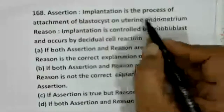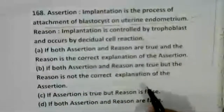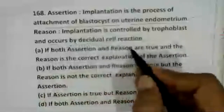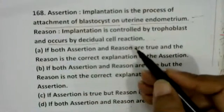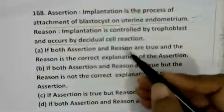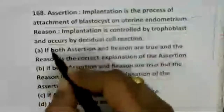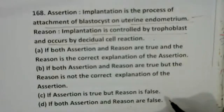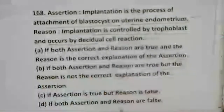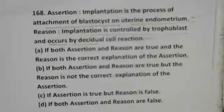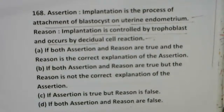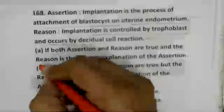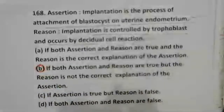Assertion: implantation is the process of attachment of the blastocyst on the uterine endometrium — correct. Reason: implantation is controlled by the trophoblast and occurs by decidual cell reaction — correct. The trophoblast cells are derived from the outer covering layer of the blastocyst. Both are correct, but the reason is not the correct expression of the assertion — option two.